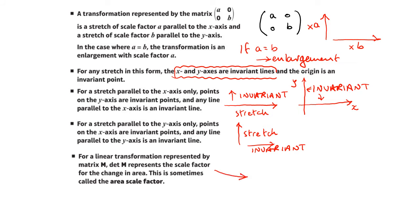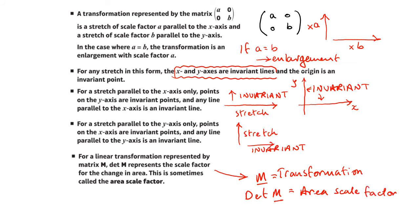Here's an important result: if we have a transformation matrix M, the determinant of that matrix represents the area scale factor. So for any linear transformation — not just enlargements or stretches — the determinant of the transformation matrix gives you the area scale factor. That's going to be really useful.